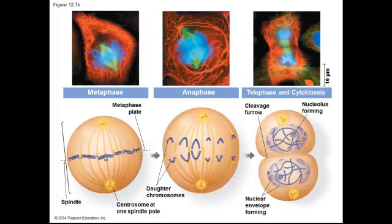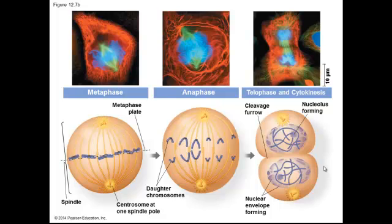We call this area the metaphase plate — it's not really a plate, just a location, not a structure. Once that happens, anaphase begins, and this is where all of the sister chromatids are separated from each other by the microtubules — kind of like reeling in a fish. The last phase of mitosis is telophase, where the nuclear membrane begins to reform, chromosomes are at opposite ends of the cell, cytokinesis begins, and when cytokinesis completes the entire process is over.